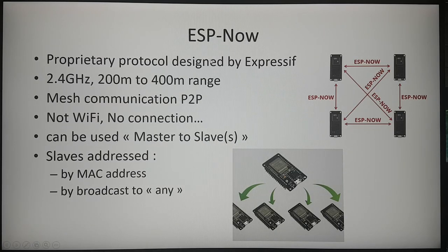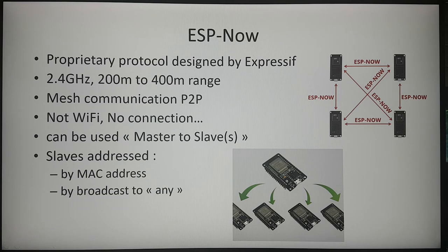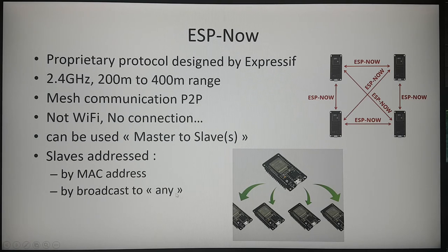ESP-NOW is a protocol designed by Espressif, the manufacturer of the ESP board, allowing a mesh network between any ESP32 boards in a 200 to 400 meter range. It uses the same 2.4 GHz band as Wi-Fi but is not Wi-Fi — it does not need any connection and is more or less a peer-to-peer mesh communication. There is no formal master/slave notion in ESP terminology, but we can use this concept: a master sending packets to slaves, addressed one by one via their MAC address or broadcasted using a generic MAC address FFFF.